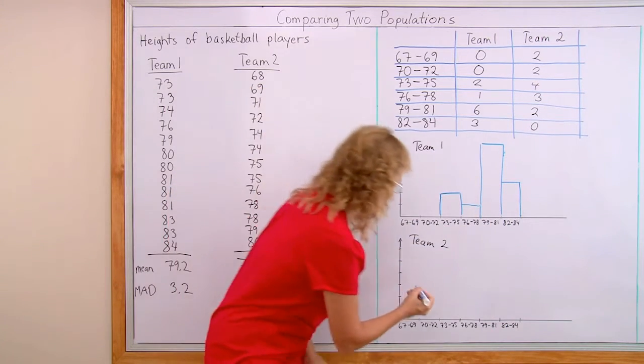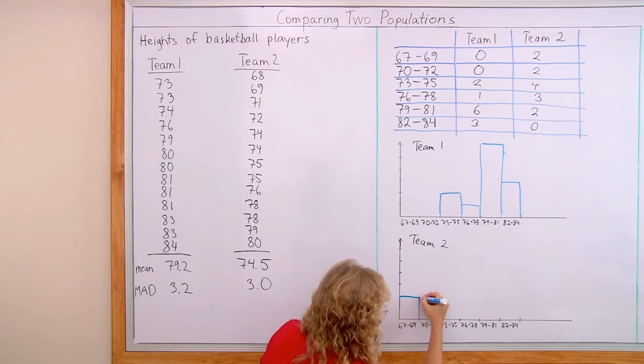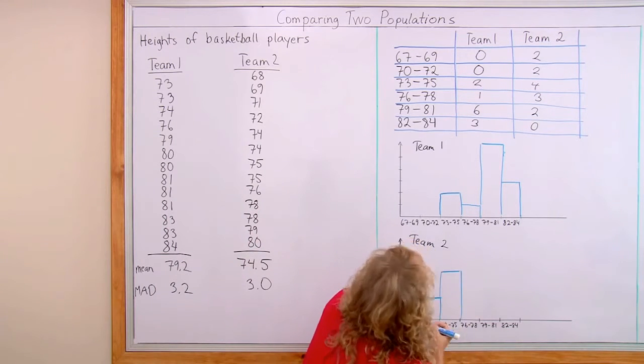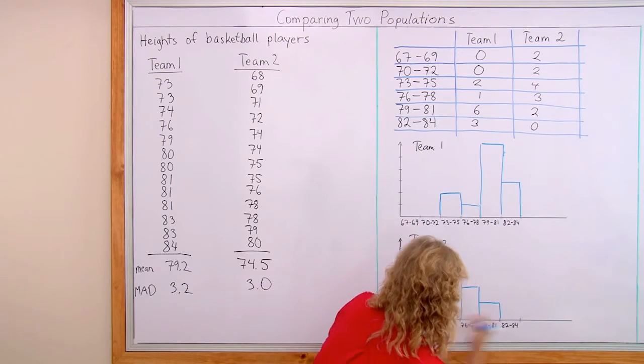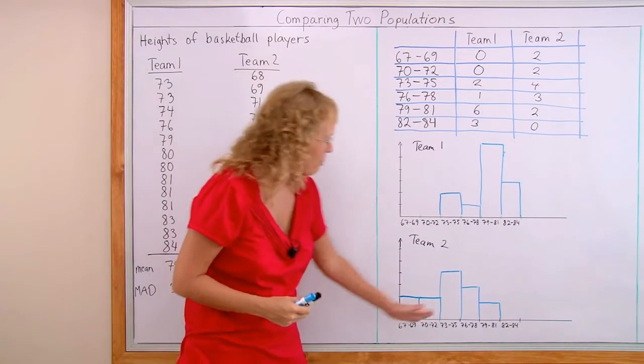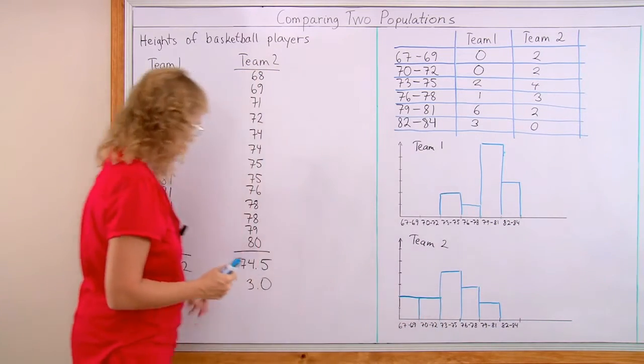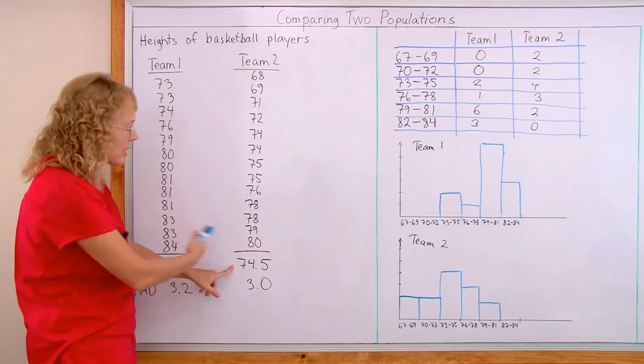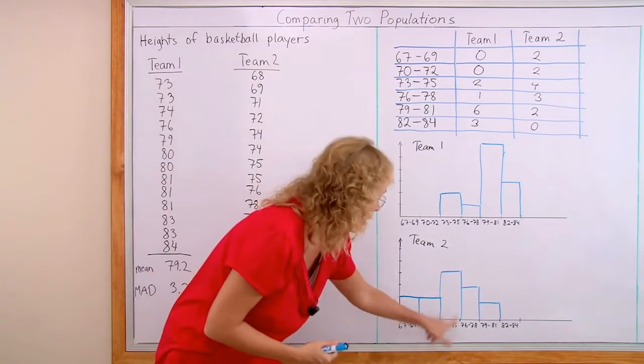Okay, and then this one, 2 and 2 and 4. There. Now, here we see the peak is about here. The central tendency mean was 74.5, which is in this bin.